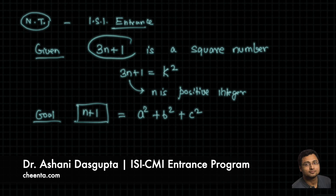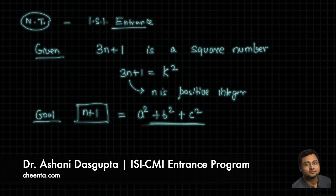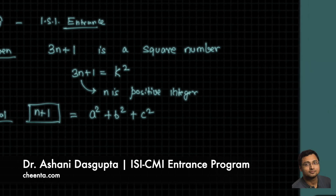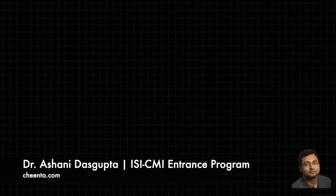So if 3n + 1 is itself a square number k², then n + 1 is the sum of three positive square numbers — looks very intriguing! You can pause the video here and give it a try, or proceed to the hint section. Remember, you have to try the problem on your own if you want to learn something from it. Here is the hint.